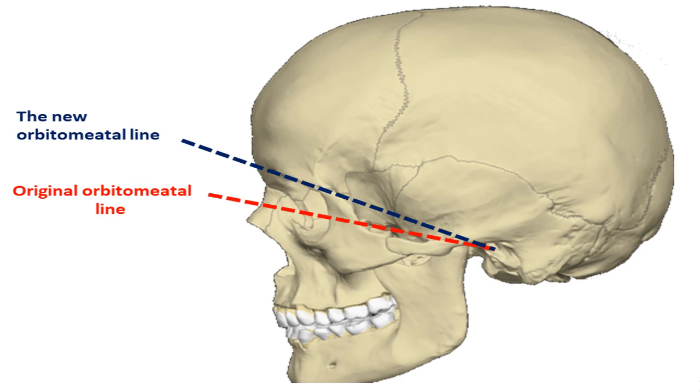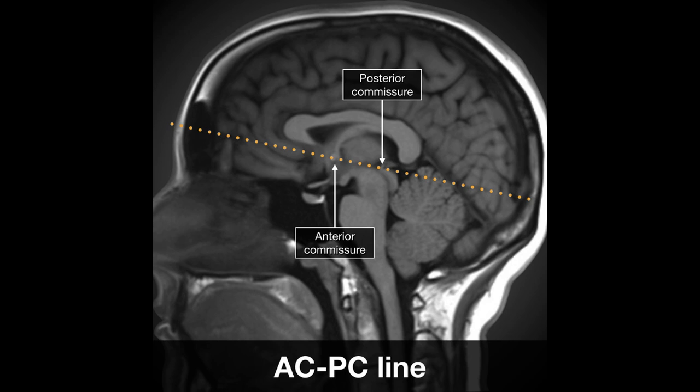There is another line that can be used for the scout of CT. It is a totally different line called the bi-commissural line. It connects between the upper anterior commissure and the lower posterior commissure. It is slightly more angled than the cantho-meatal line, and it is the standard scout of MRI, but it can also be used as a scout in CT scan.